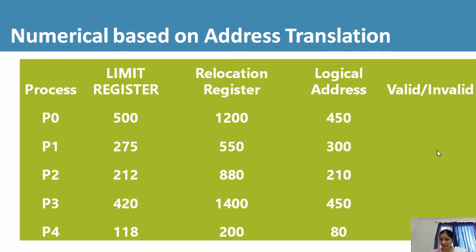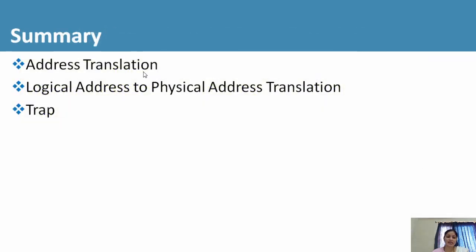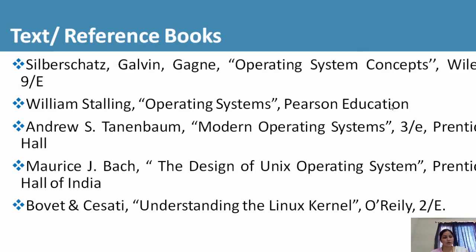I hope you have understood through this example. Let's summarize today's session. We covered address translation, which is a very important concept in memory management. We covered what are logical addresses and physical addresses, what is the need of converting logical to physical address, how they are converted using the limit register and the relocation register, and what is a trap or addressing error and how it is captured using the limit register. The reference books I would suggest are Silberschatz and Galvin, William Stallings, Tanenbaum, J. Bach, and Bovet and Cesati — these are some good reference books for these topics.